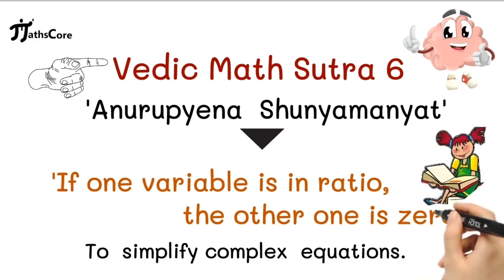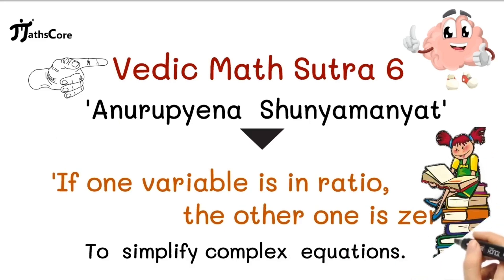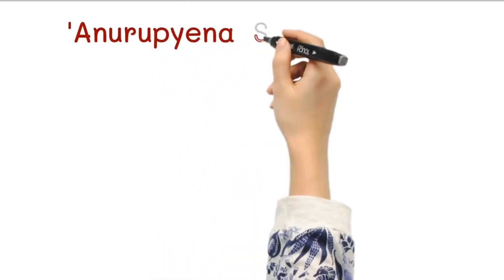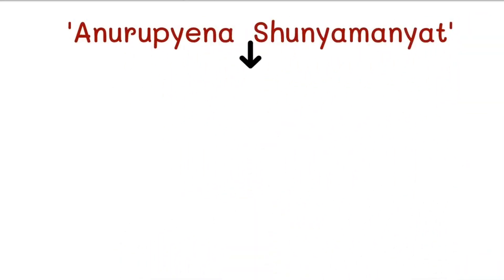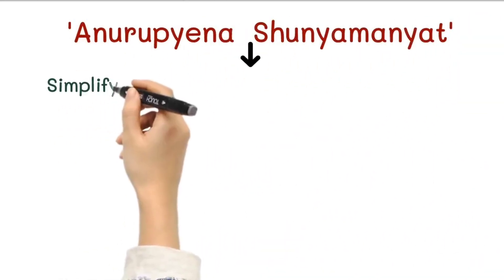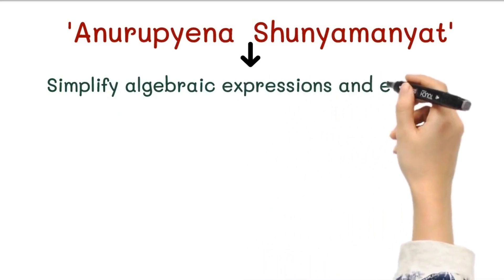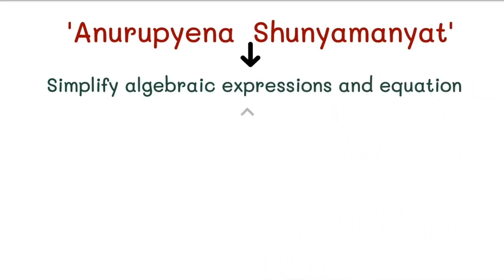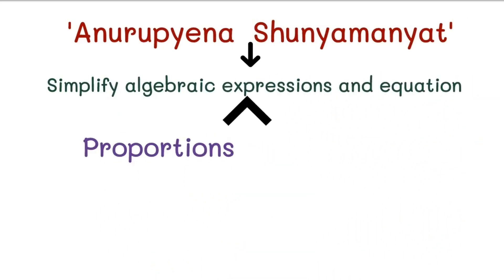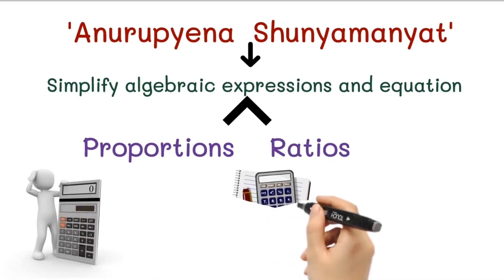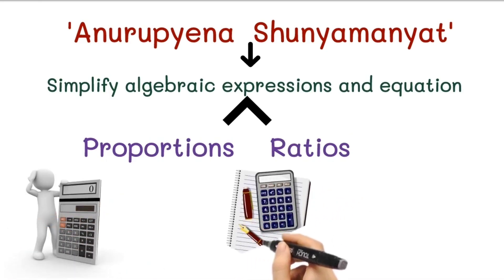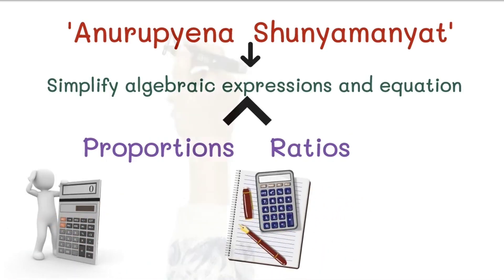This sutra, Anurupena Shunyamanyat, is used to simplify algebraic expressions and equations, especially when you are dealing with proportions and ratios. While it might sound abstract, it becomes clear with practical examples.